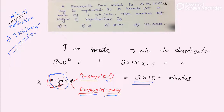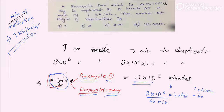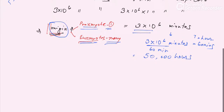We found that the DNA amount needs 3×10⁶ minutes to replicate. Converting to hours — since one hour equals 60 minutes — we divide 3×10⁶ by 60, which gives us 50,000 hours needed for this replication to occur.